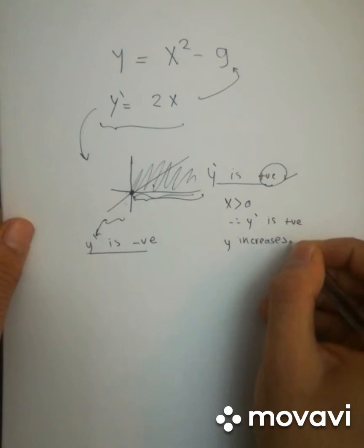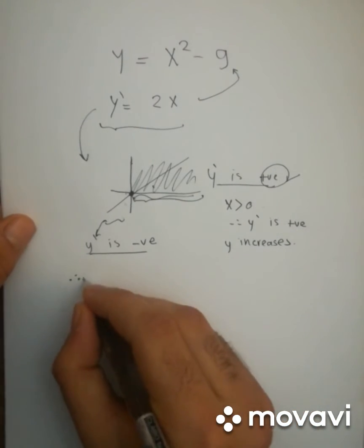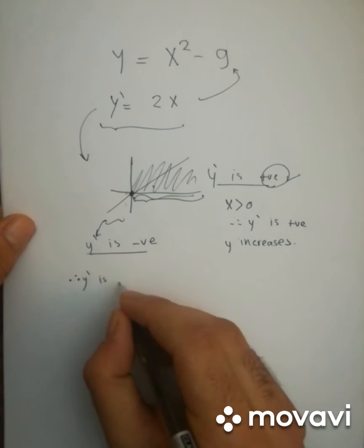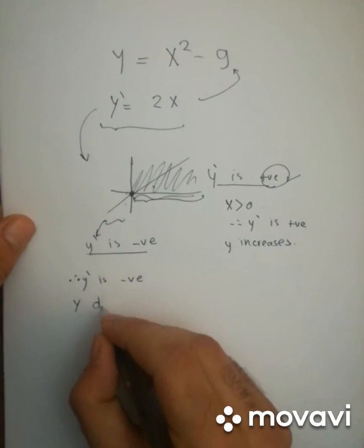And since here, y-dash is negative, function y decreases.